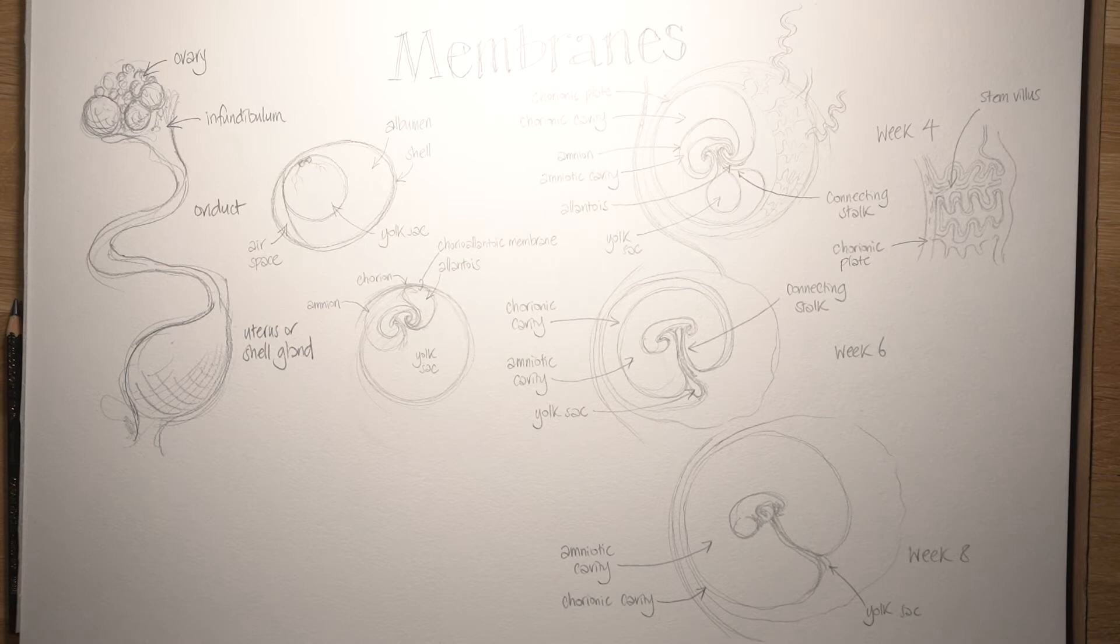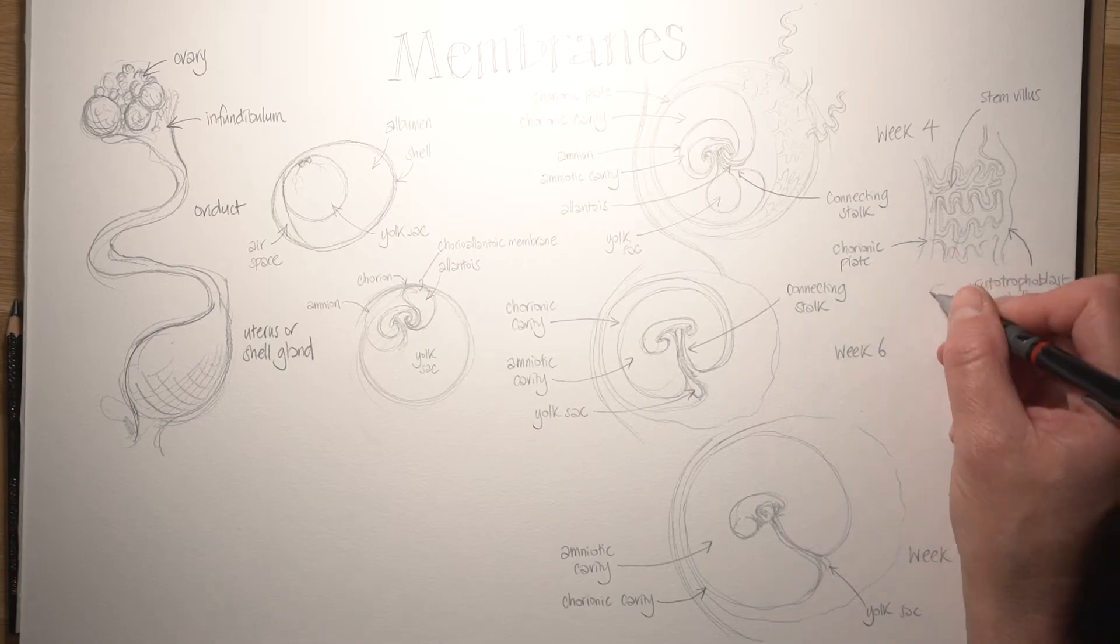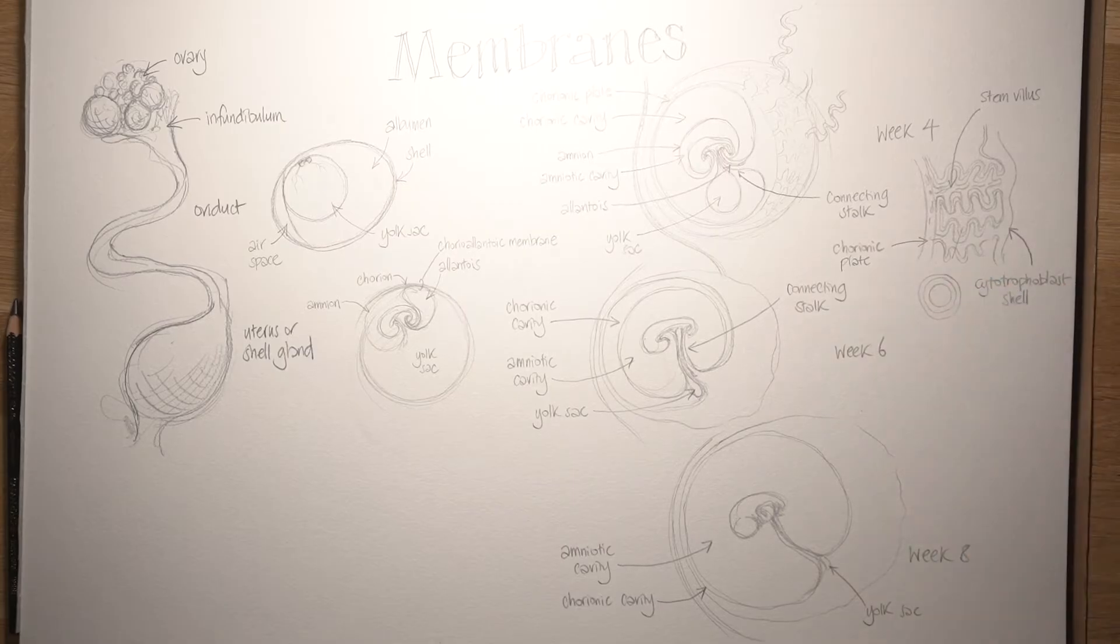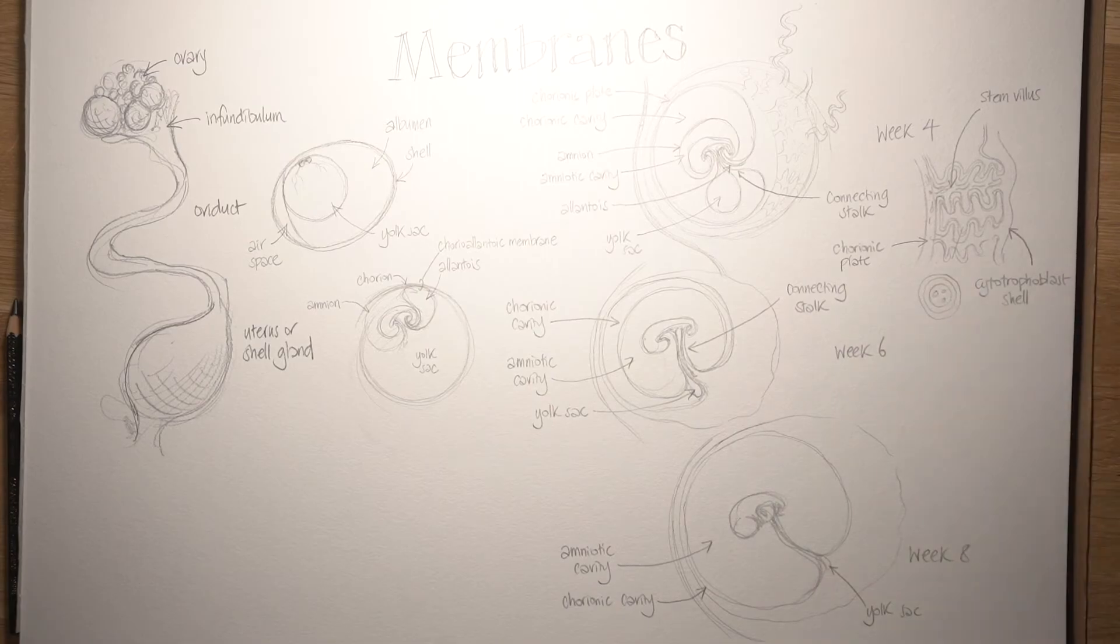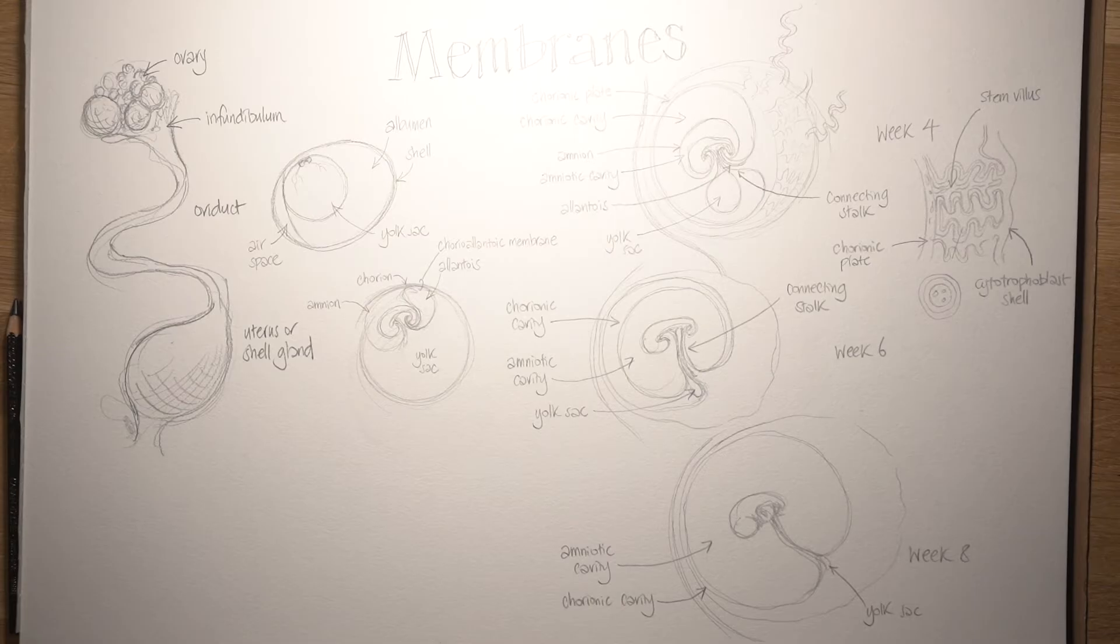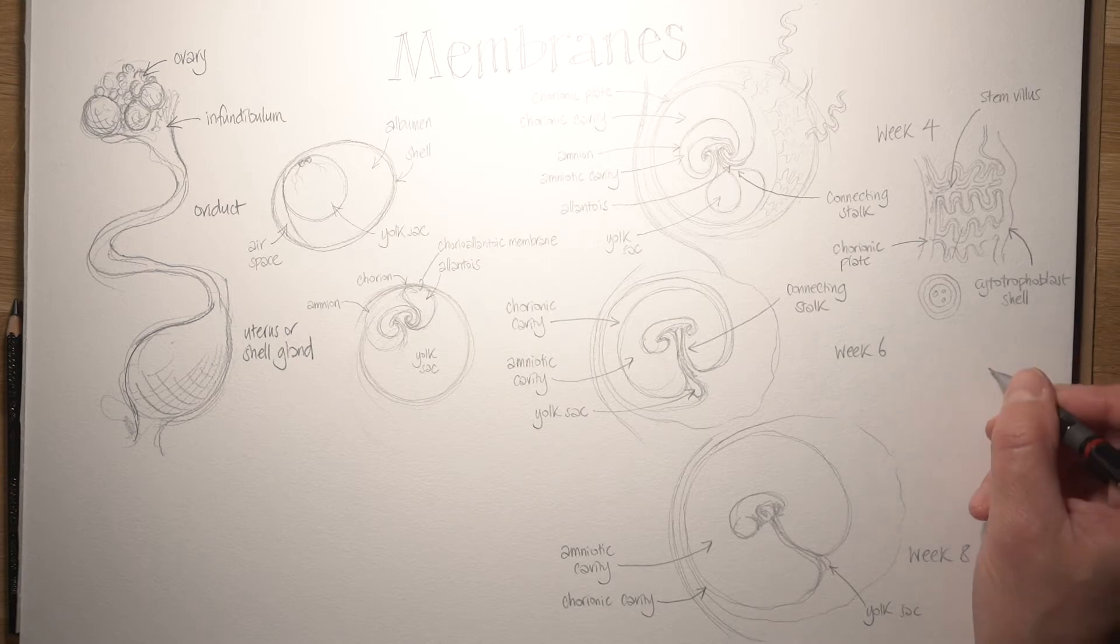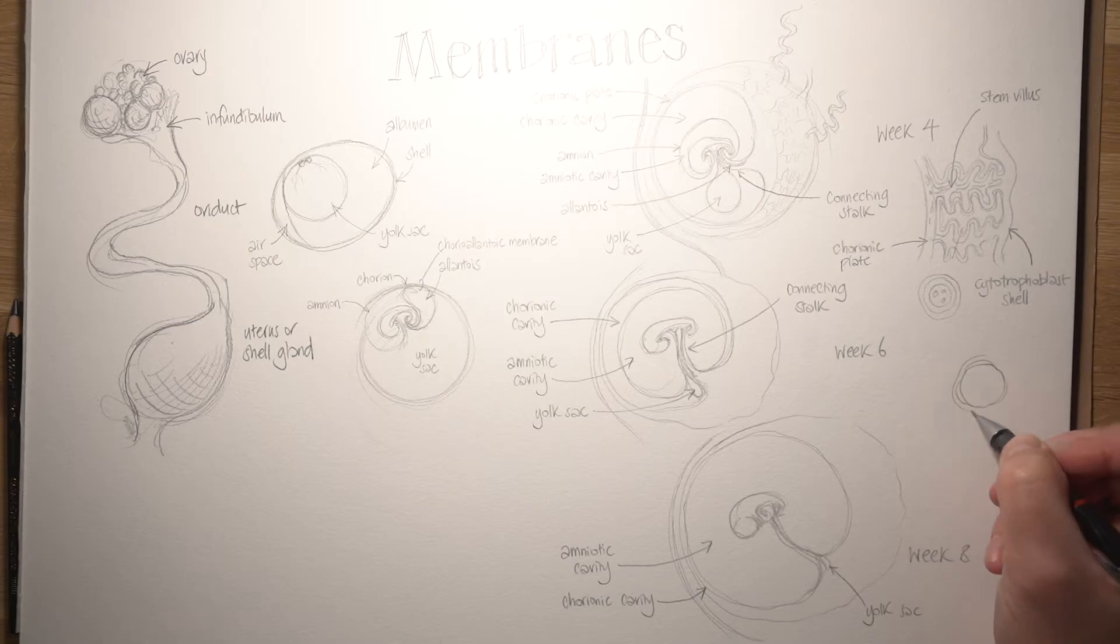The stem villi reach all the way out to the edge to the cytotrophoblast shell and then there are free villi branching off from them into these spaces, the intervillus spaces, the spaces between the villi. If we look at these villi as they develop and we do a cross-section through them, we see that we've got a core of extraembryonic mesoderm and then around that is a layer of cytotrophoblast and then around that is a layer of syncytiotrophoblast and those are projecting into those intervillus spaces which contain maternal blood.